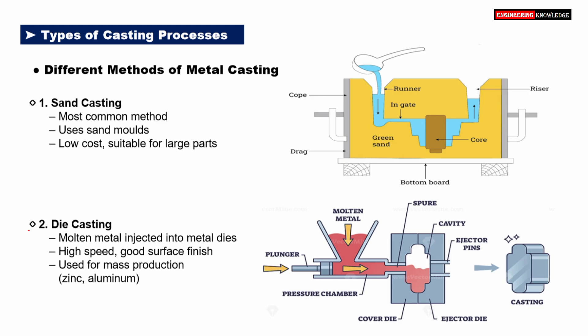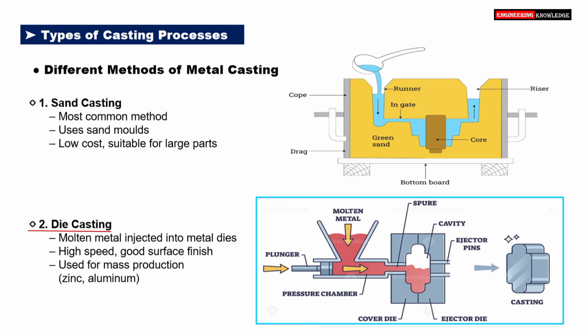The second method is die casting. Here, molten metal is injected into a metal mold, also called a die, under high pressure using a plunger. The metal flows through the sprue, fills the cavity, and takes the shape of the die. Once solidified, ejector pins push the casting out. Die casting provides high surface finish and dimensional accuracy, making it suitable for mass production using metals like zinc and aluminum.